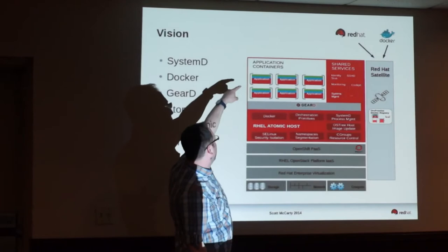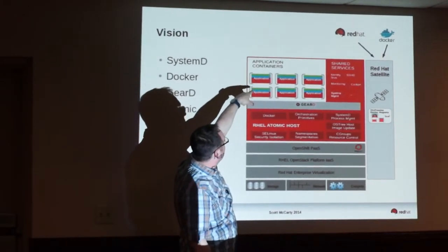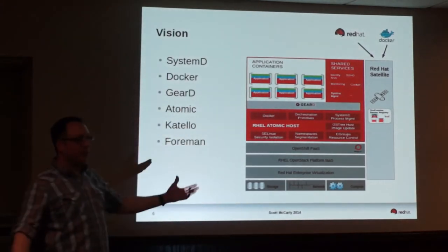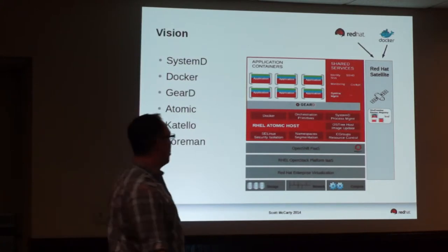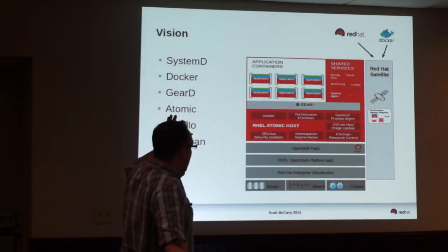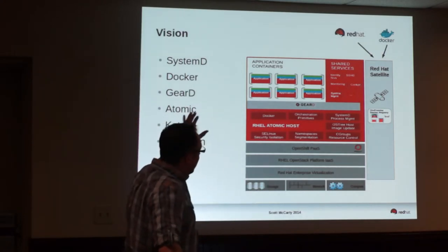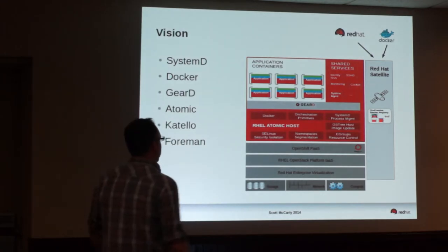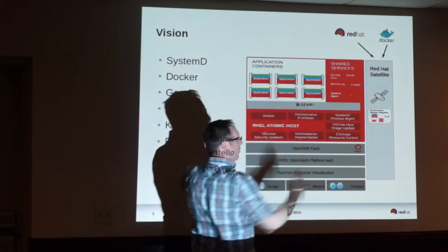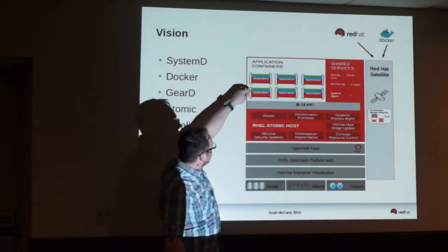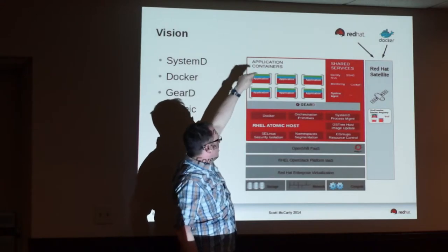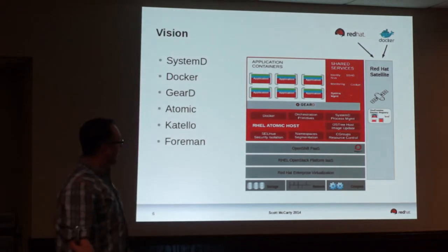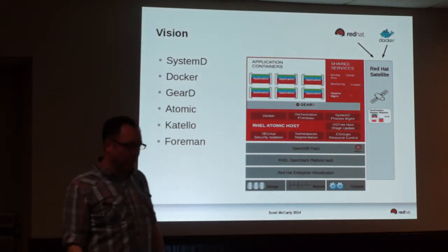These are your application containers. Those shared services provide things to the other containers. You need SSH to get into the box and manage containers. Red Hat's idea is to get you to the point where you can just start up Oracle on one container, SAP on another, Apache on another, Tomcat on another. Everything else is shared services in the OS that provide value to those containers.